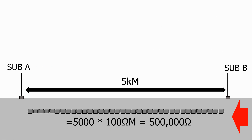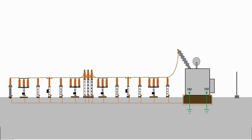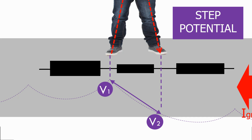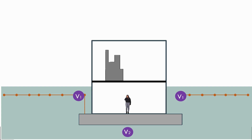We will then look at the impacts the ground fault current has on personnel working inside the substation, and in particular how step potential puts personnel working inside the substation in real harm when a fault occurs. We will see how we can make the substation safe during all typical ground fault scenarios.